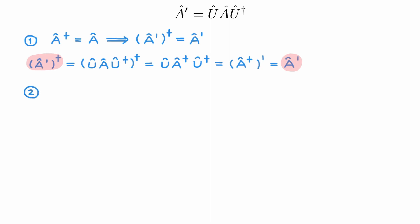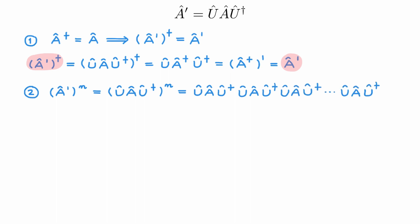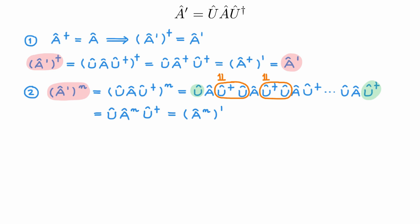Second, let's consider the nth power of the unitary transformation of A. We write A' = UAU†, then explicitly write the n terms in the power. All the terms U†U give the identity, leaving U times n factors of A times U†. By definition, this is simply the unitary transformation of Aⁿ. This means that the power of the unitary transformation equals the unitary transformation of the power.